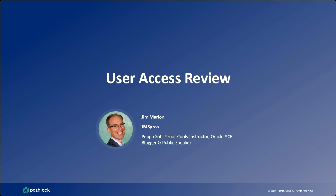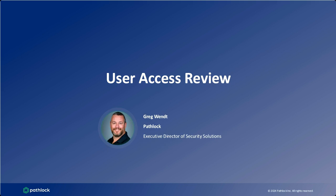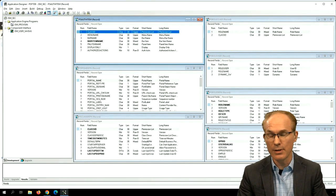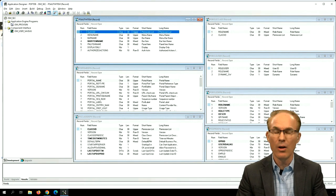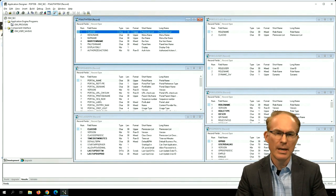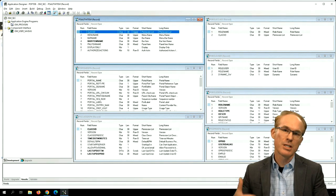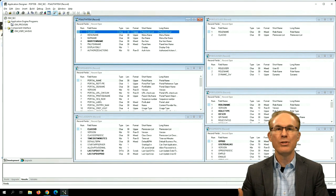Moving on to our next area — with cyber insurers getting more particular about having automated and well-defined access governance and controls in place, many organizations are now doing more user access reviews: pulling information about who has what access to what system, sending it to an approver, and having them go through the approval process. Jim, can you walk us through how you do that today with delivered PeopleSoft tools? For the automated movers and leavers portion of JML, that would really be dynamic roles — automating the process is certainly possible, it just requires customers to write queries to identify the criteria and assign those to roles.